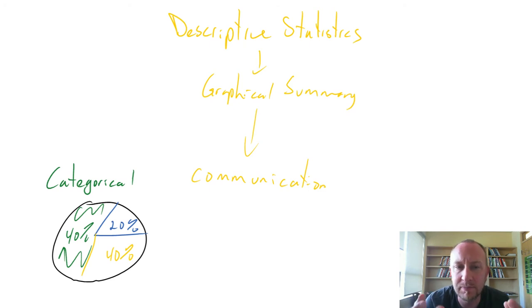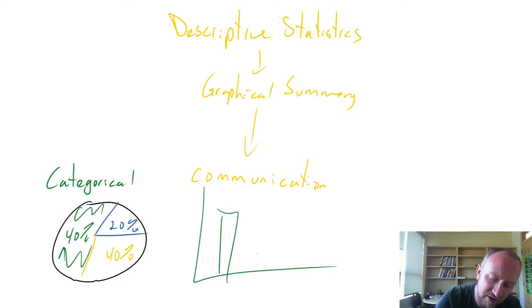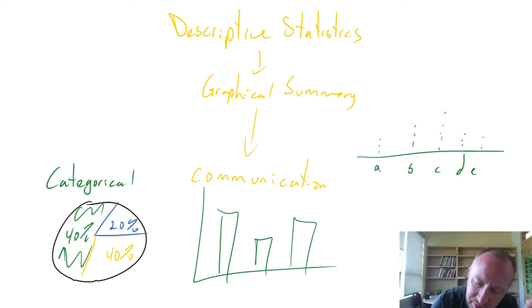So we'll have pie charts like this one. We'll look at bar graphs where the different heights have some particular meaning. We'll look at dot plots. We'll have some label here A, B, C, D. Maybe these are numbers and the height of those dots has some particular meaning.